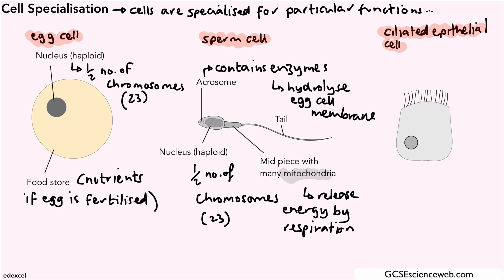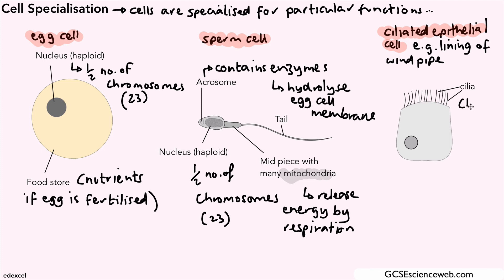Our last cell is our ciliated epithelial cell, and an example of where you might find this is in the lining of the windpipe. We could call the windpipe the trachea, but they are found in that lining, and along those cells we have little hair-like projections called cilia. These are like small hairs — and why are they so important?